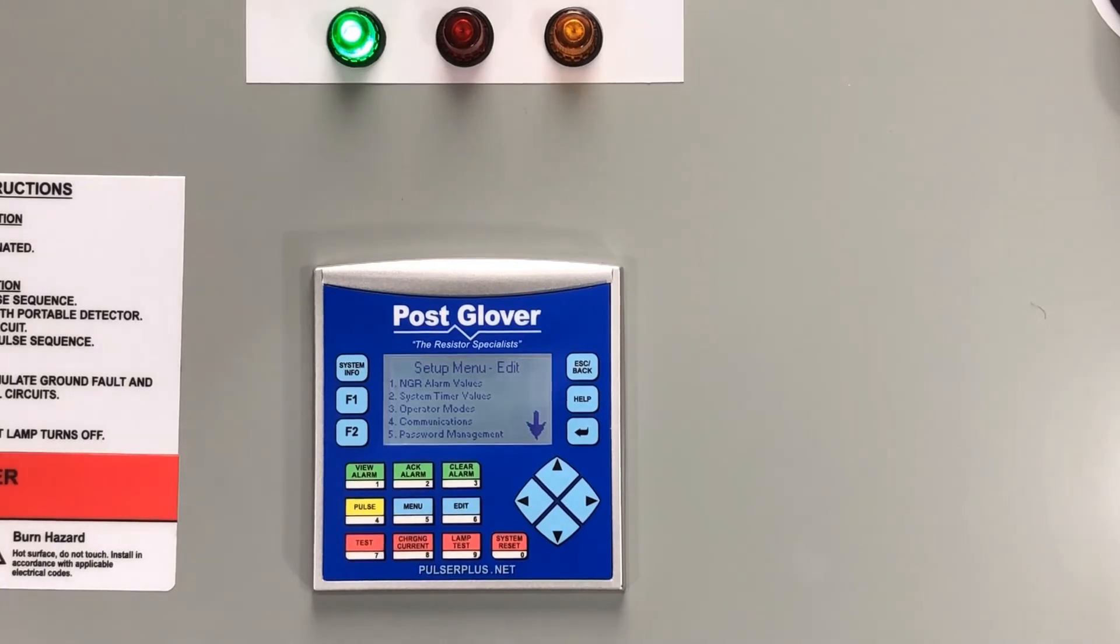It is that simple and this lets you know that the lights are working correctly. If you have any questions, please contact us by email at sales@postglover.com or give us a call at 859-283-0778.